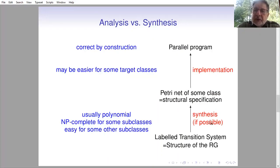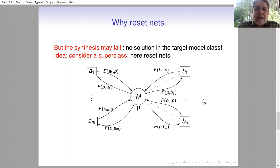But it may happen that the synthesis is simply not possible, that it fails, essentially because the target class is a bit too narrow. Hence the next idea is to consider some superclass of models, that is an extension of Petri nets.